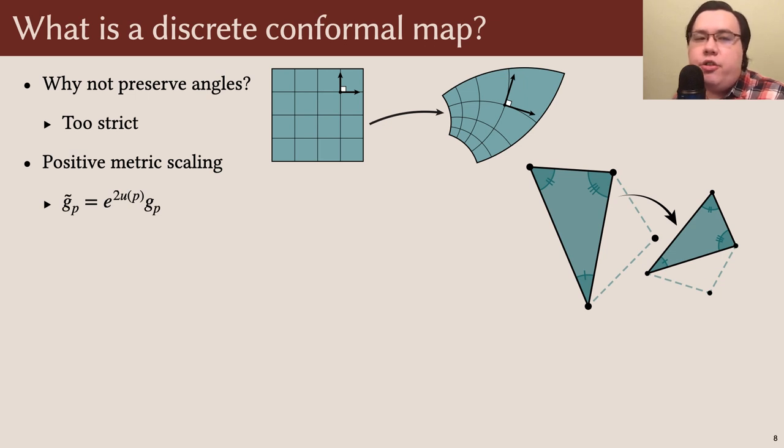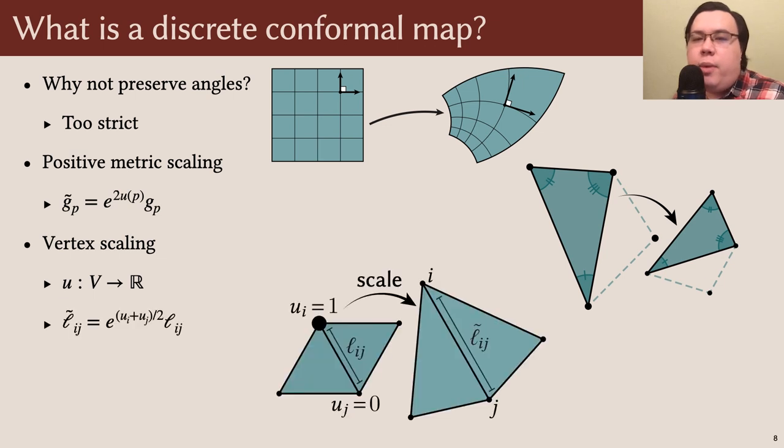The analogous discrete notion is vertex scaling. Given a log scale factor u at each vertex, we scale each edge by the average of the u values at its endpoints. For example, here we set ui to b1 and set u to 0 at all other vertices. Then all edges incident on i get longer, while all other edges remain the same length. While this definition appears simple, it's just flexible enough to lead to a rich mathematical theory capturing many of the desirable properties of smooth conformal maps.